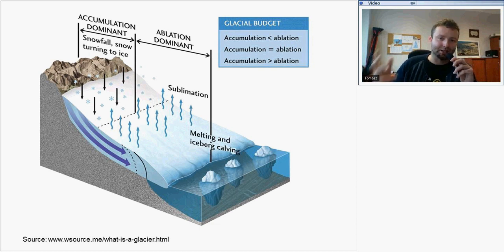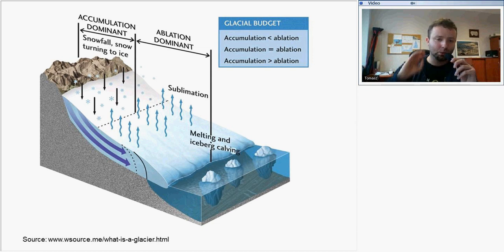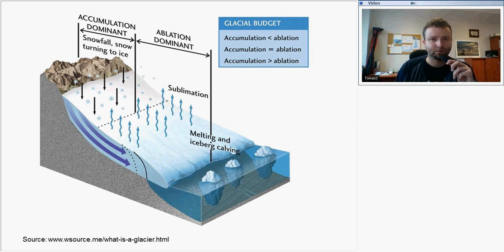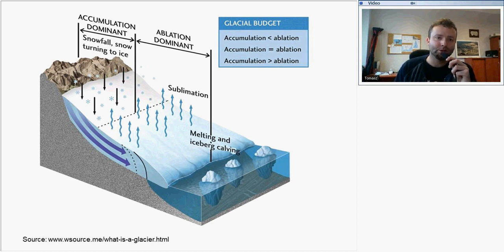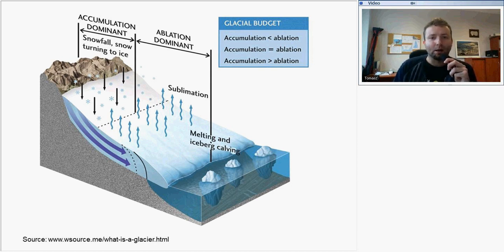If accumulation is lower than ablation, the glacier is retreating and the mass balance is negative. Due to climate change and climate warming, we observe negative mass balance in most glaciers around the world, so ablation is higher than accumulation and glaciers retreat.